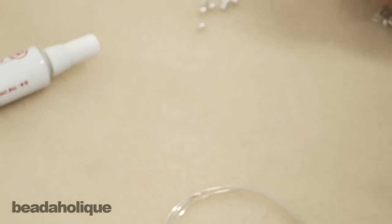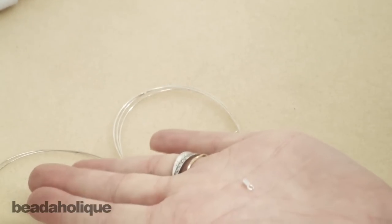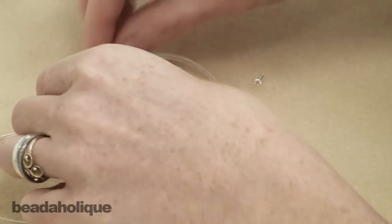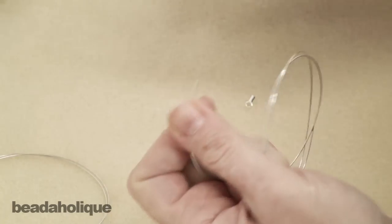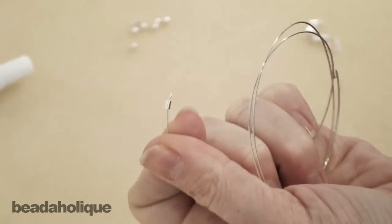Another way is with these little crimp beads that have a loop already attached. So I'm going to do that on another end. To work with these, what you're going to do is go ahead, just pop it on there.